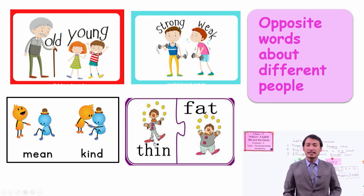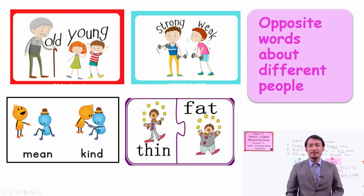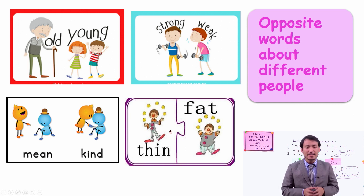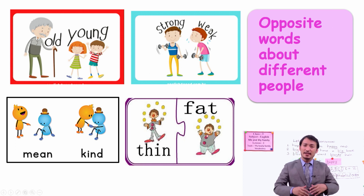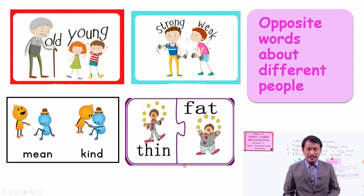Thin is having a very skinny body — you have a smaller size of your body. And fat means having a lot of fat in your body. So a thin person has less fat, less flesh, and a fat person has a lot of fat in their body. Fat and thin are opposite words to describe people.